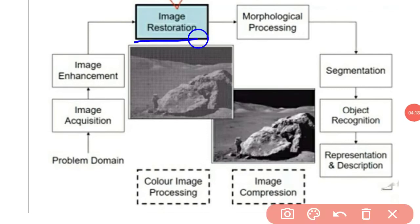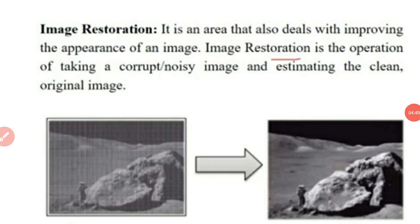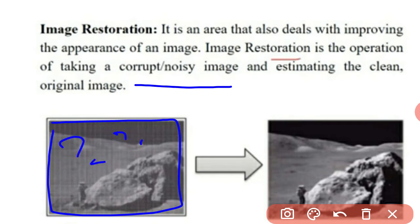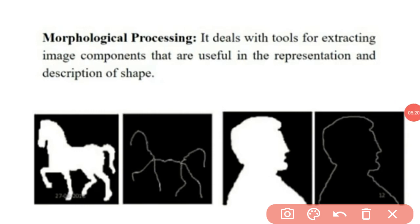Image restoration takes an initial input image displayed on screen, removes background information and noise, and recovers the original output signal displayed on the CPU. Image restoration deals with improving the appearance of an image by taking a corrupt or noisy image and estimating the clean, original image. By removing background noise, we get the original output signal.